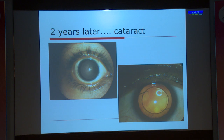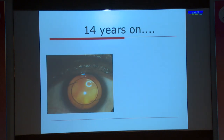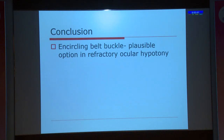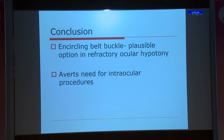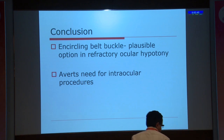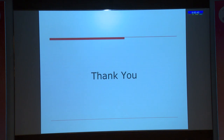Two years later, the patient developed a cataract that was successfully managed with cataract surgery. Fourteen years on, the patient is doing very well. In conclusion, an encircling belt buckle, which is purely extraocular, is a plausible option in refractory ocular hypotony — particularly in cases where no definite cause is identified. This acts more like a blanket treatment to occlude a possible cyclodialysis cleft, and more importantly, it avoids the need for any intraocular procedures.